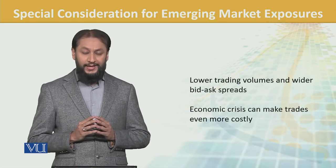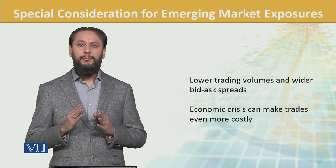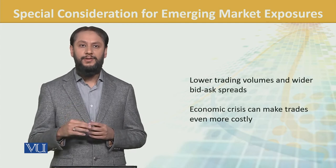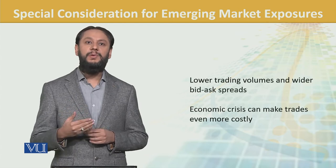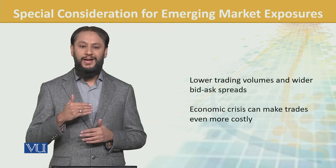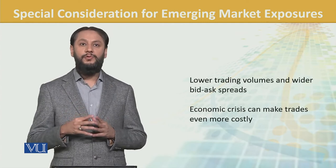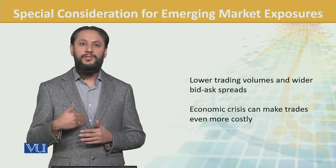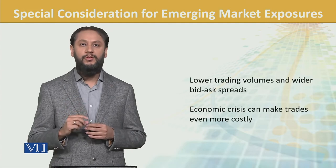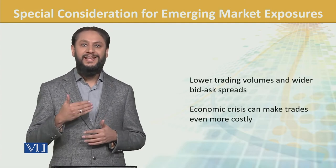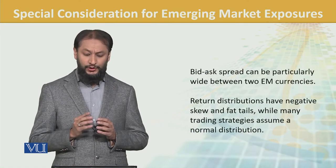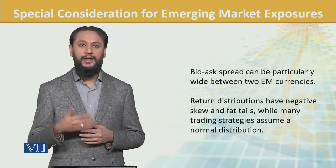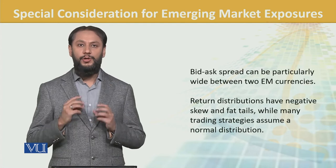Lower trading volumes lead to wider bid-ask spreads. Bid hota hai ki aap kis rate pe buy karenge, aur ask woh rate hai jis pe aap sell karne ke liye willing hain. Normally agar aachi developed market hai toh inka gap kama hota hai, lekin bid-ask spread particularly wide ho sakta hai between two emerging market currencies, kyunki dono ki nature emerging hai, chhoti market hai.